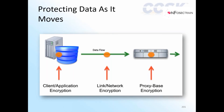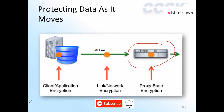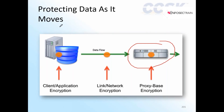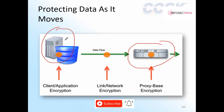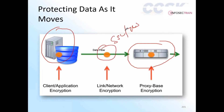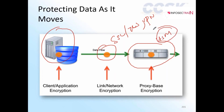We can encrypt data at any of these points prior to moving it within the cloud. Encryption can be done at the client side, at the application level, while data is on the wire in transit, or using a third-party dedicated device. At the client or application level, I can encrypt data as a file, dataset, or XML document. At the network level, I can use SSL, TLS, or VPN.